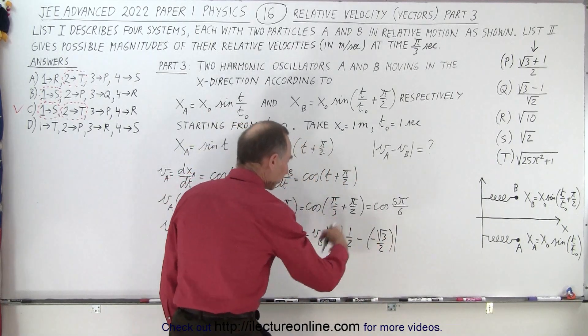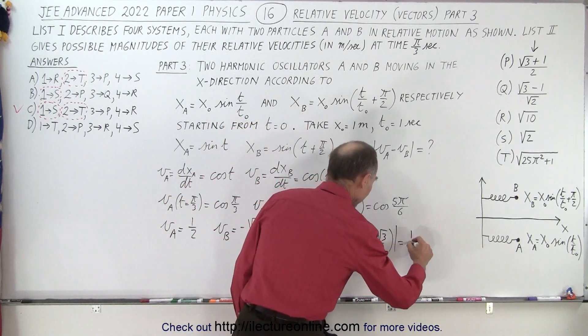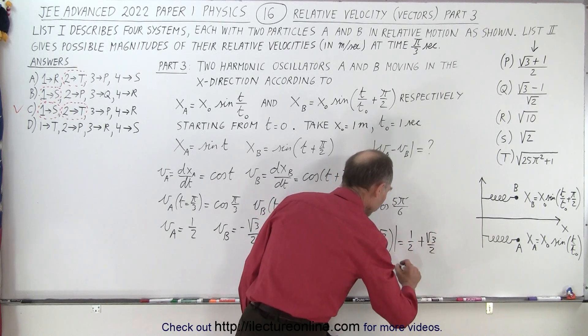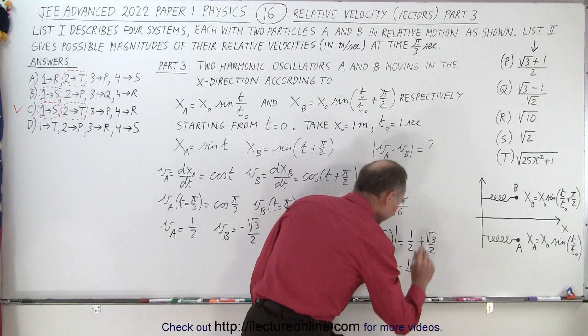Of course, minus minus is a plus, so we can take off the absolute value signs. So essentially, we end up with one-half plus the square root of three over two, which could be written as one plus the square root of three over two.